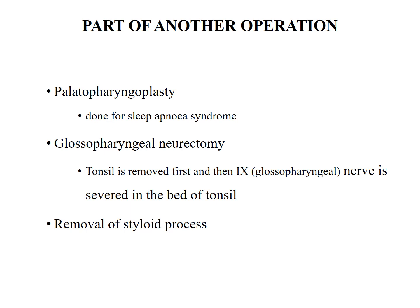Tonsillectomy as part of another operation: studying the anatomy, there are many structures in the tonsillar bed, and to approach those structures you have to remove the tonsils. Examples include uvulopalatopharyngoplasty (UPPP) or palatopharyngoplasty, usually done for sleep apnea syndrome — where you remove the soft palate, uvula, anterior pillars, tonsils, posterior pillars, and mucosa from the posterior pharyngeal wall. Also glossopharyngeal neurectomy, where the tonsil is removed first and the glossopharyngeal nerve is severed in the tonsillar bed, and removal of the styloid process.